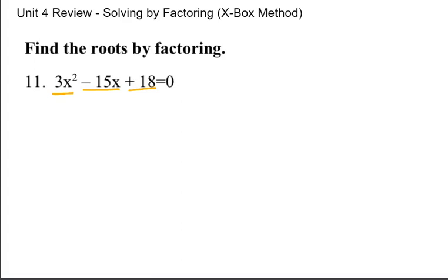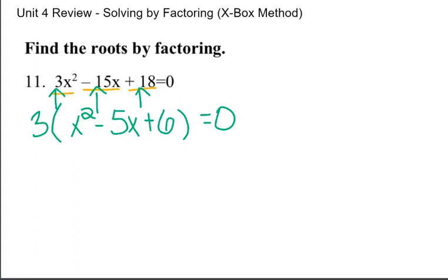The second question we want to ask is, is there a GCF? Is there a number that can go into 3, negative 15, and positive 18? Well, 3 can go into all of those. So I'm going to divide everything by 3 and pull it outside of the parentheses. 3x squared divided by 3 leaves me with x squared. Negative 15x divided by 3 leaves me with negative 5x. And 18 divided by 3 leaves me with 6. So all I did was divide everything by 3.